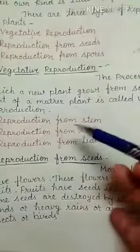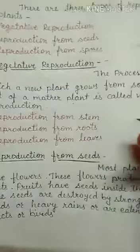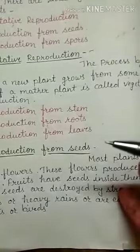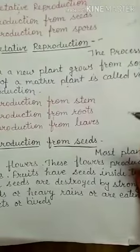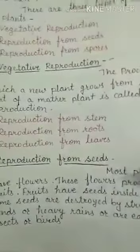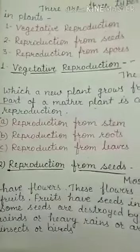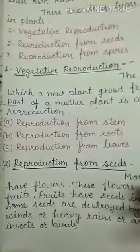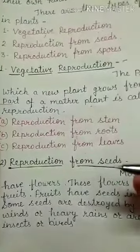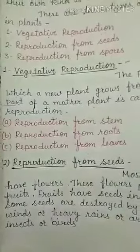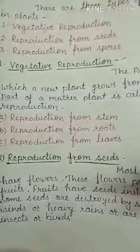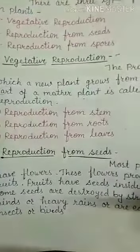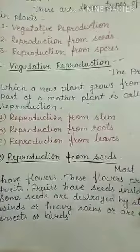Next is reproduction from leaves. Some leaves grow plants from their edges. The leaves of bryophyllum have many buds along their edges. Such leaves are heavy and remain near the ground. The new plants have their own leaves and roots. These roots grow long till they reach the ground, and then the plants separate from the mother leaf and grow on their own.